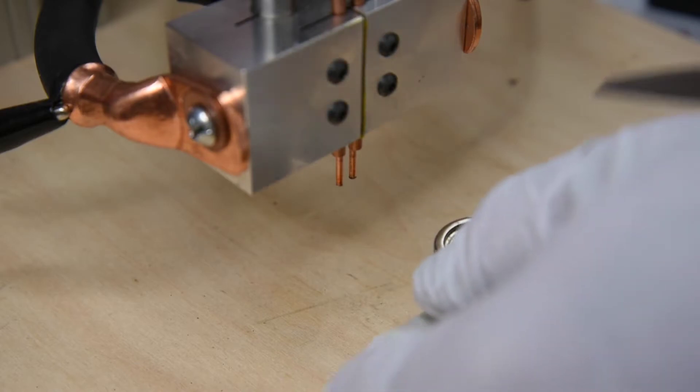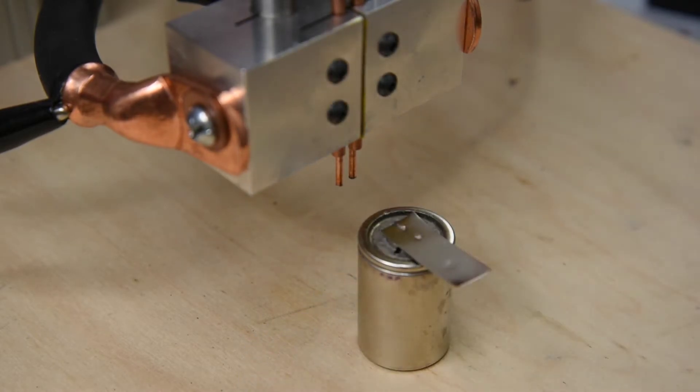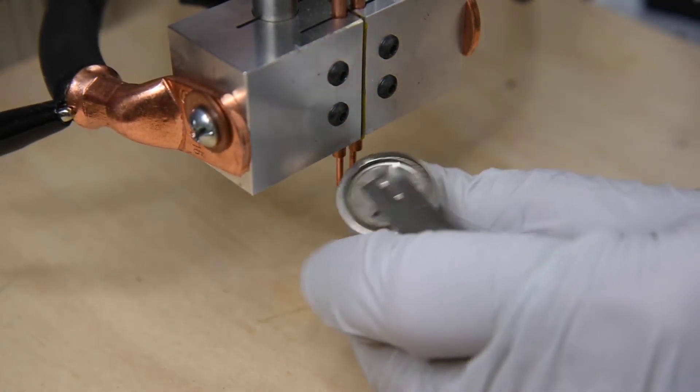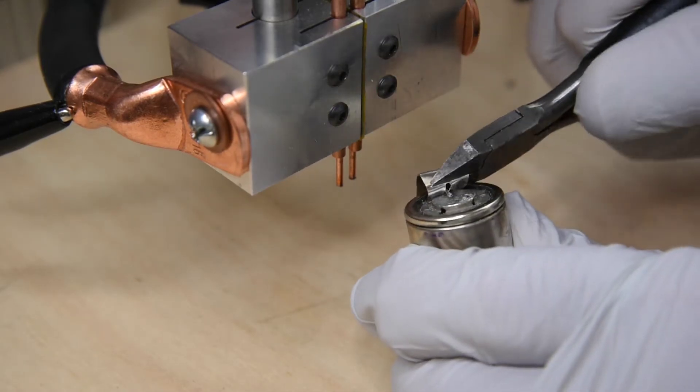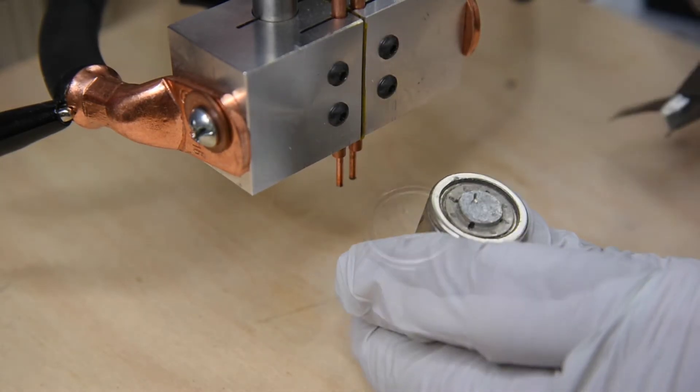So here I took the pressure down to 5 pounds. Still some stick and a little bit of metal splatter. The weld nuggets are not quite as good as the 8 pound test, but still a good strong weld.